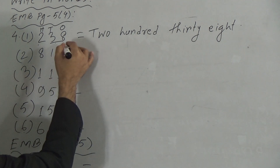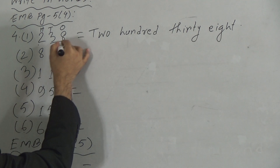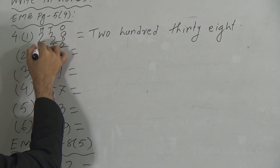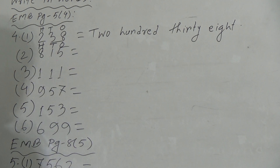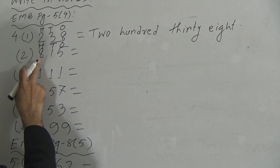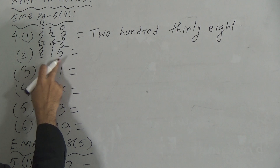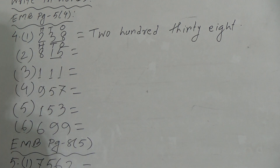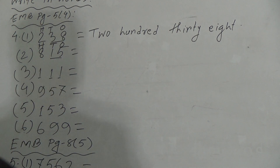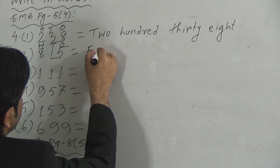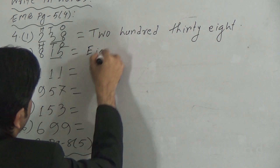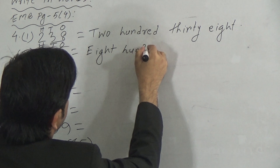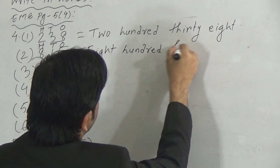Go to the next number. Here, 5 is in the 1's position, 1 is in the 10's position, and 8 is in the 100's position. So we can write here: 800 and 15 means 815.